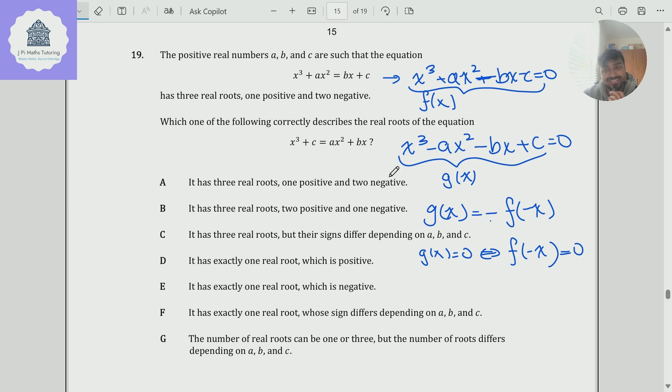Now, we know that f of x has three roots, real roots. Let's call them alpha, beta, and gamma. And let's say that alpha is the positive one and beta and gamma are negative.